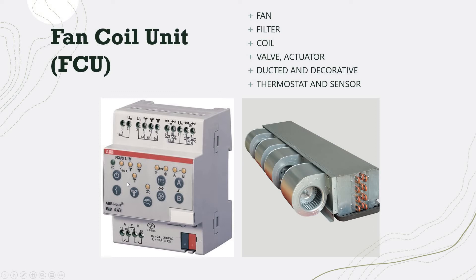Then we have the Fan Coil Unit (FCU). The FCU depends on whether you're using a chilled water system or a refrigerant-type FCU. It consists of a fan, a filter inside the FCU, a coil, and a cooling valve which can be controlled with an actuator. If you've seen residential villas in the Middle East, they heavily use this type of FCU where you have an outdoor unit, an indoor fan, and a duct system.